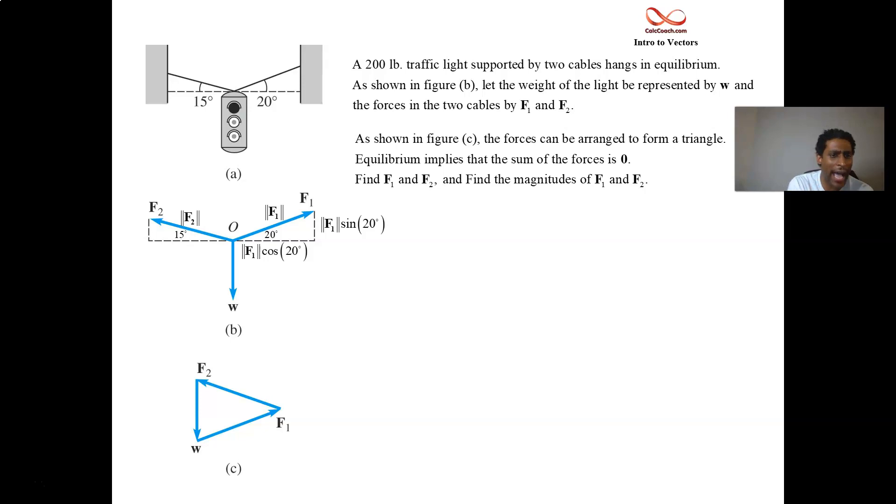Now we need the I and J components of F2. We have to remember though, the origin is at the point O. So the I component of F2 actually is negative. It points in the negative I direction.